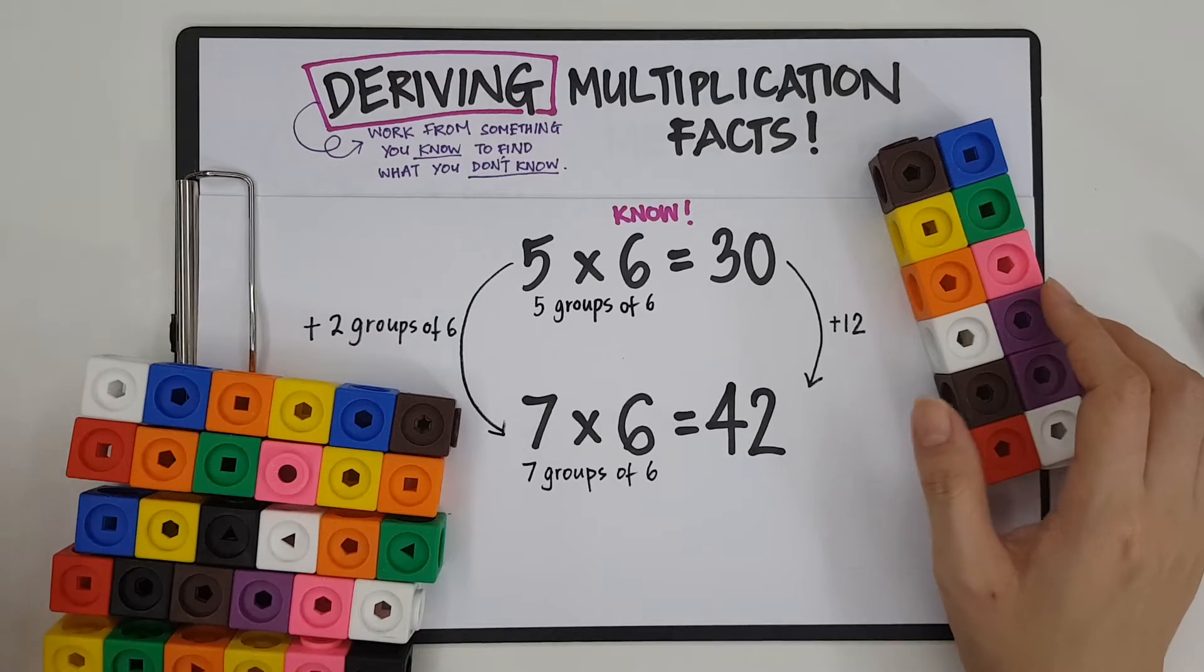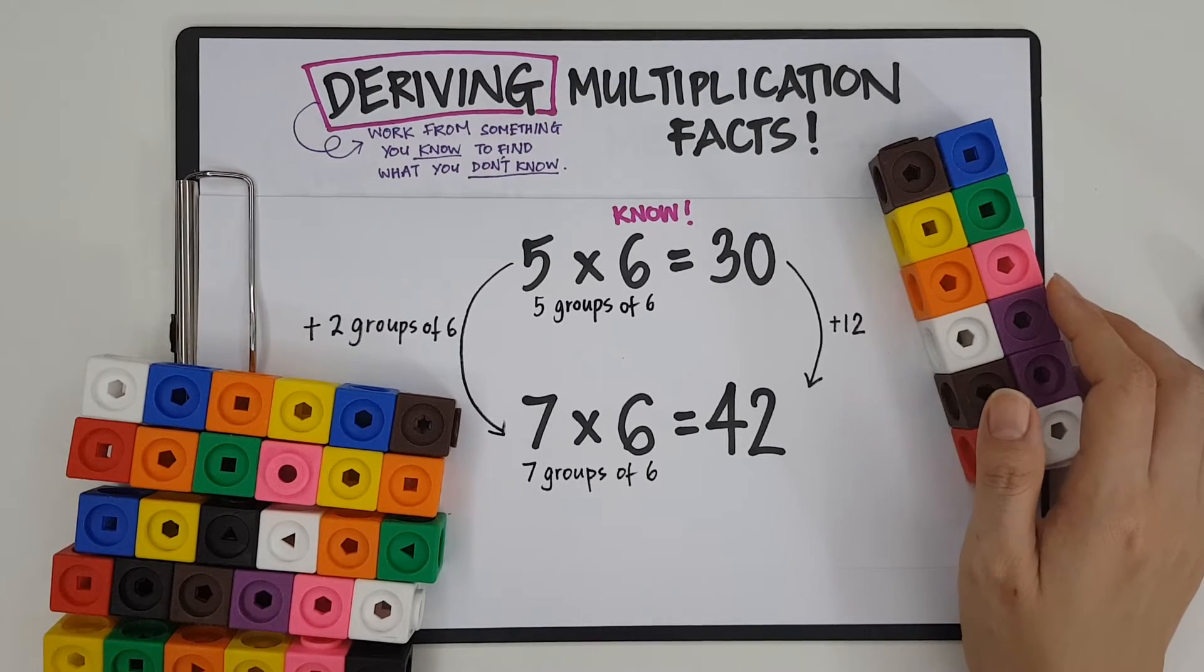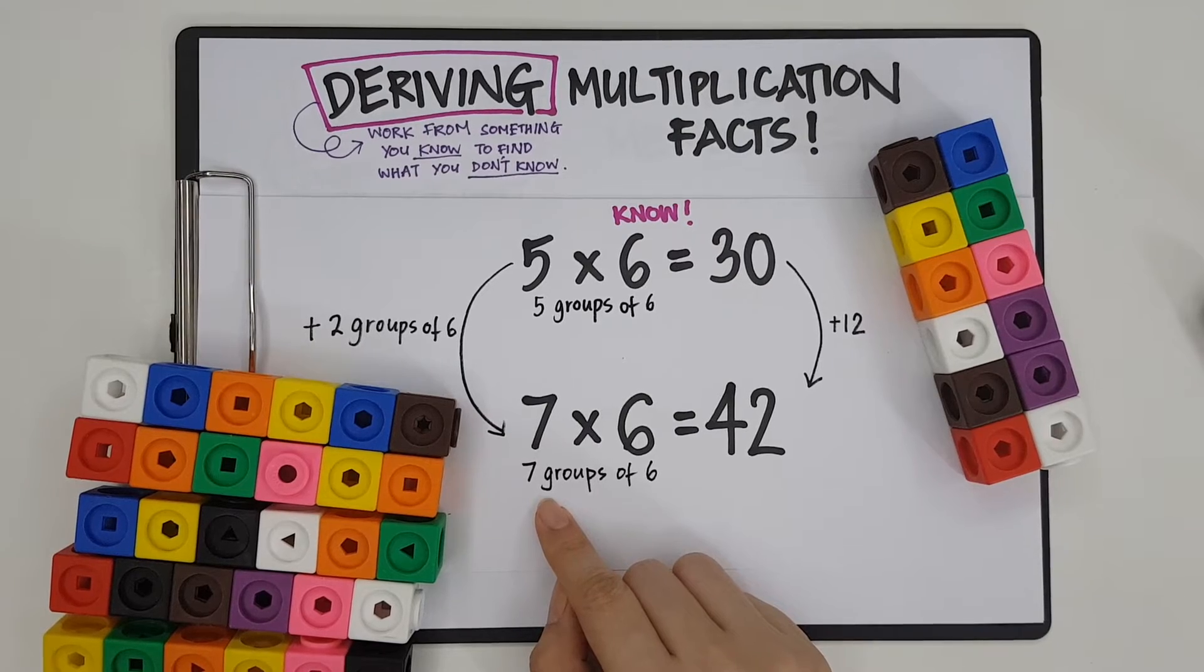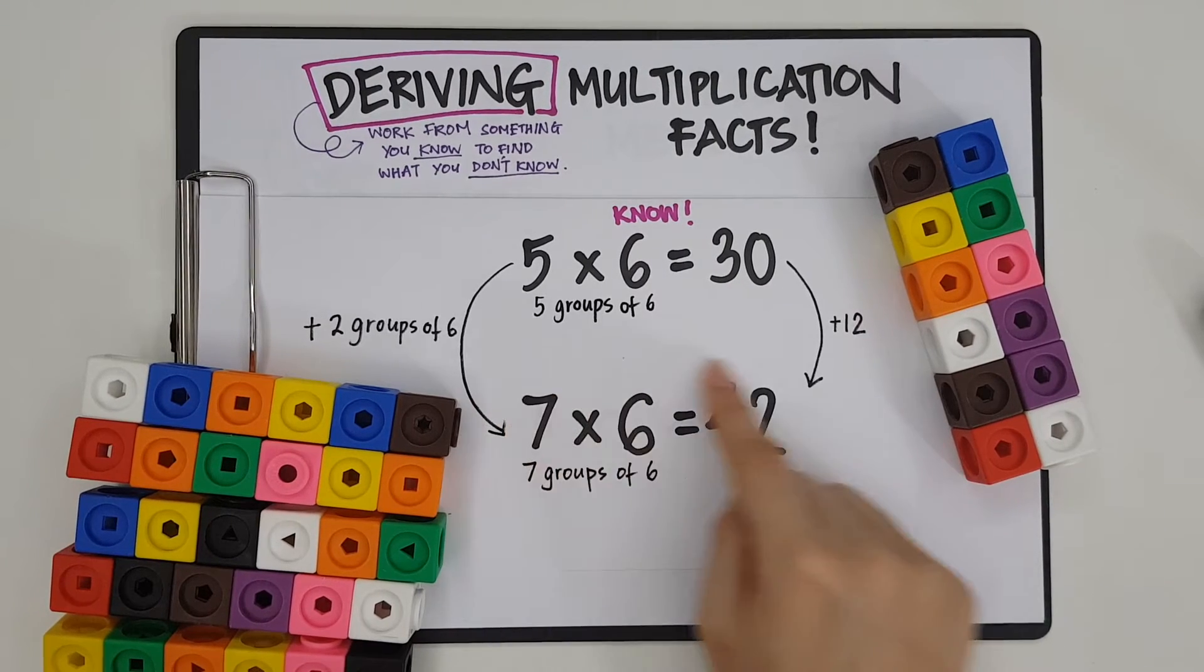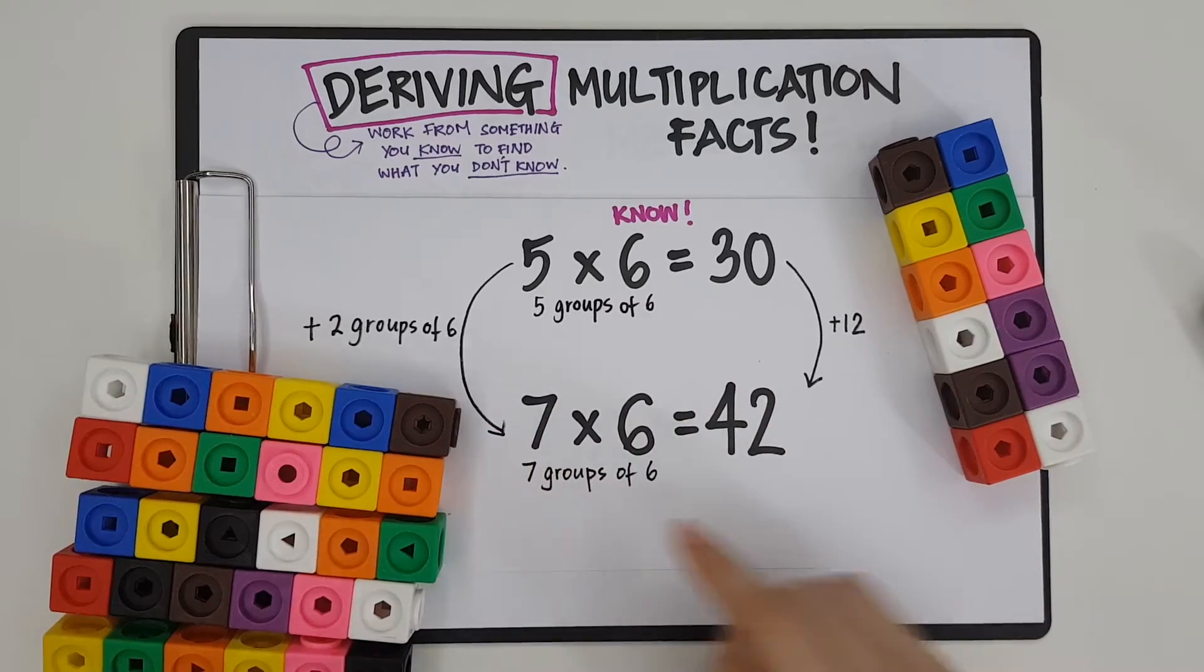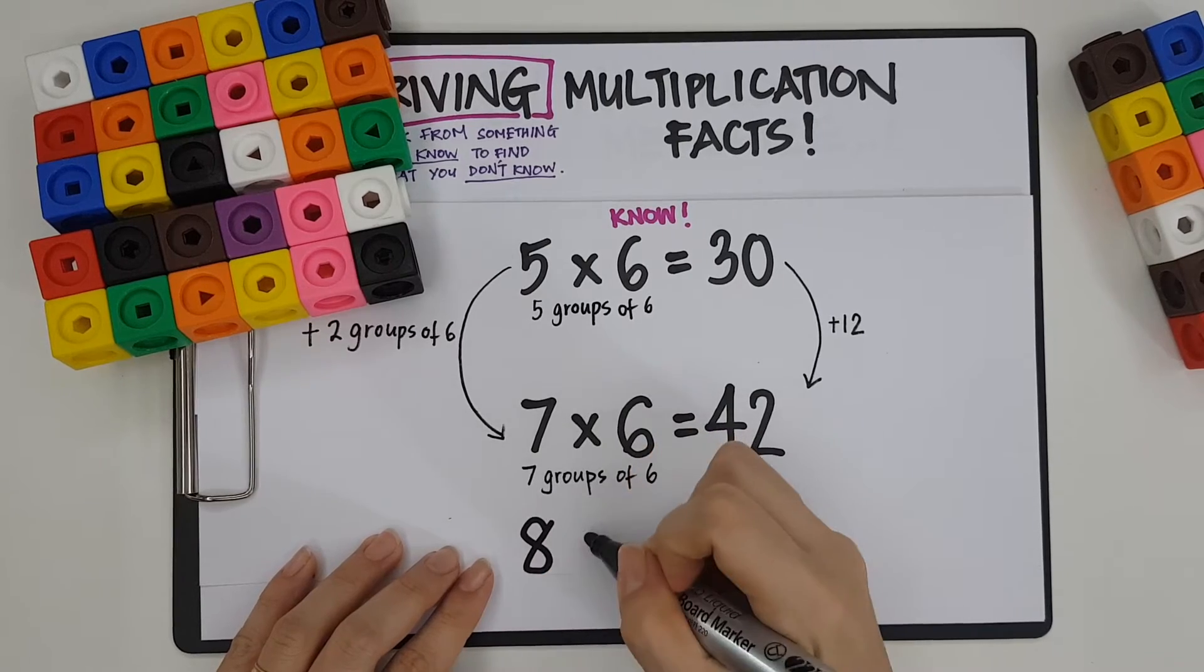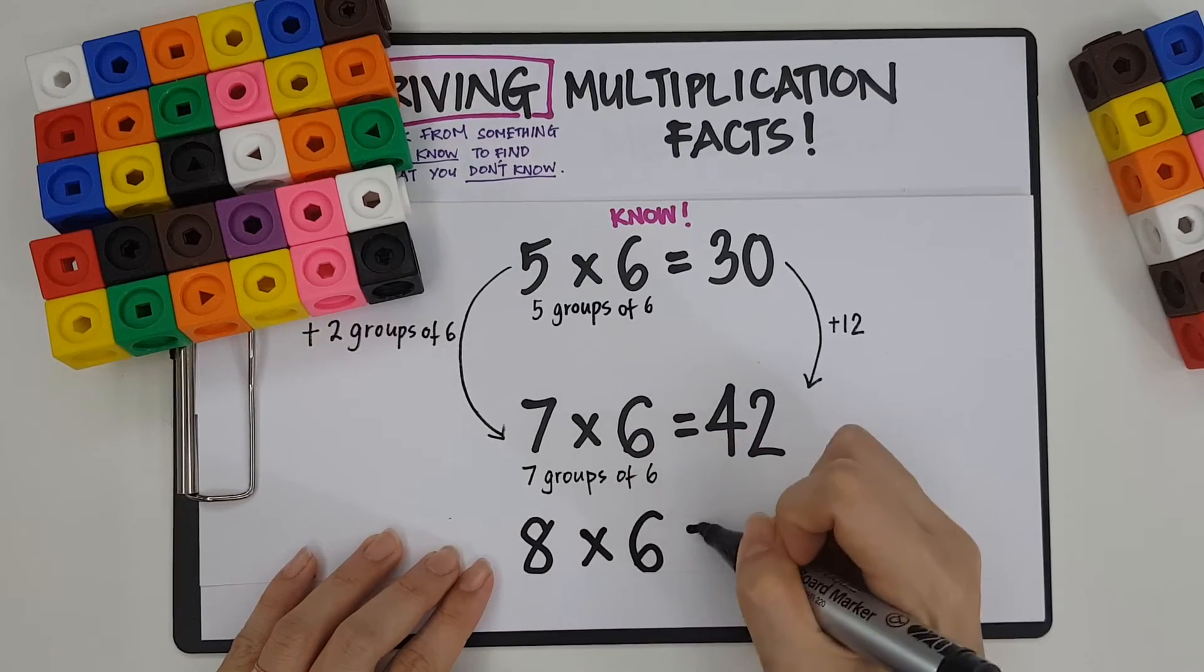So this is called deriving your facts. This is just another example. In our previous video, we did 10 groups to 9 groups. But I really wanted to touch on this because this is one of the multiplication facts that a lot of people get wrong. Yes? Another one that people get wrong would be or cannot remember would be 8 times 6.